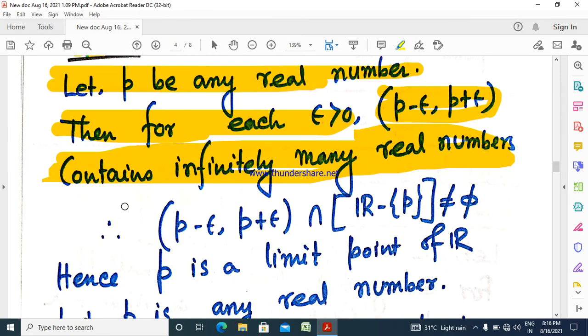So the open interval (p - epsilon, p + epsilon) contains infinitely many reals. If we take the intersection with R, R contains infinitely many real numbers.